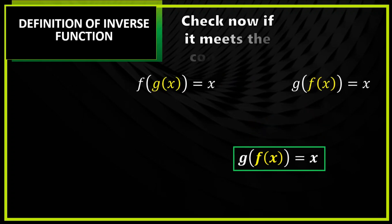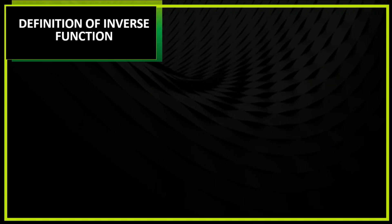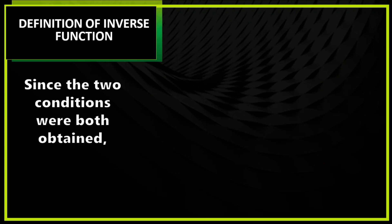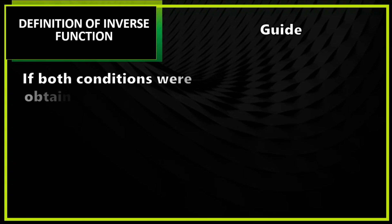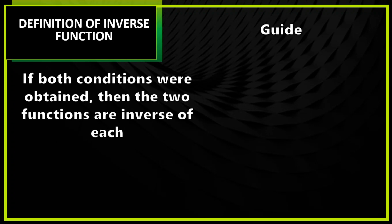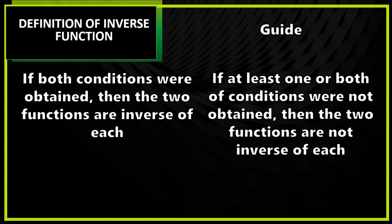Again you will check if it meets the condition — itong condition na ito ay para doon sa g of f of x. Since we have both answers as x, therefore condition 2 is checked. Since the two conditions were both obtained, ibig sabihin nun yung ating given functions na g and f are inverse of each other. Munting guide lang: kapag both conditions ang nakuha, therefore those two functions are inverse of each other. But if at least one or both conditions were not obtained — ibig sabihin hindi mo na-achieve yung x na result — then the two functions are not inverse of each other.